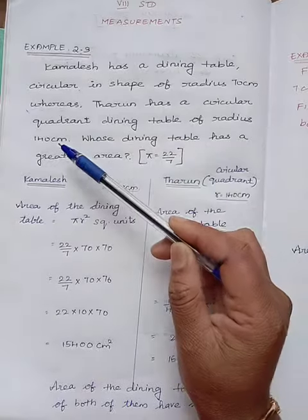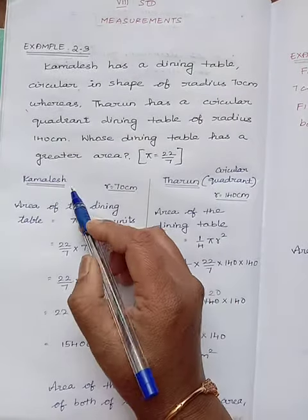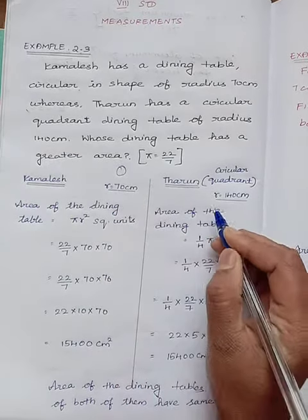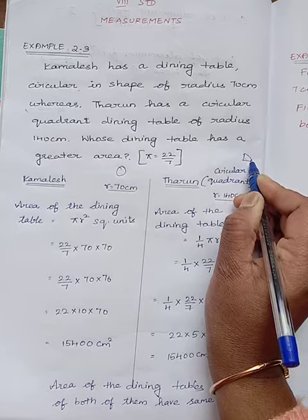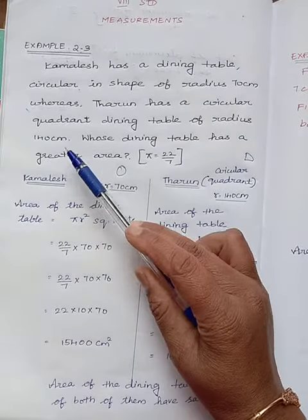Tarun has a circular quadrant dining table of radius 140 cm. So the Kamalesh dining table is in circular shape, Tarun dining table is in quadrant shape. And whose radius is 140 cm.